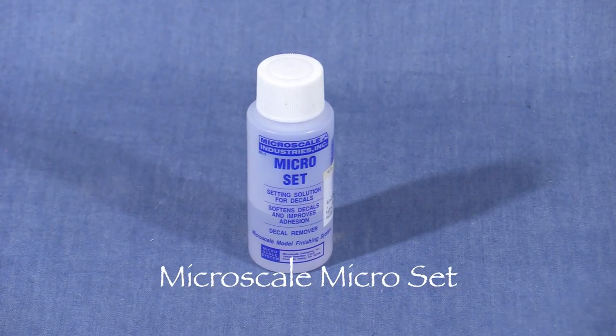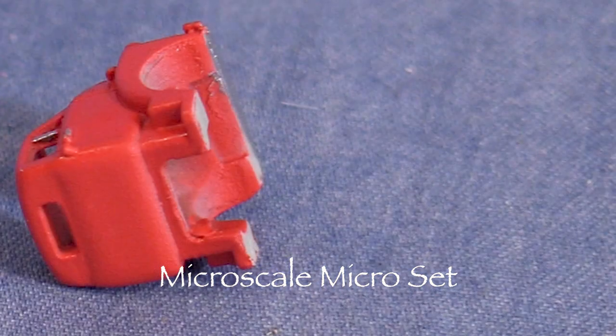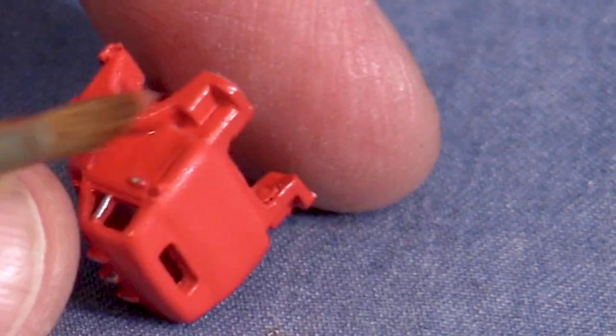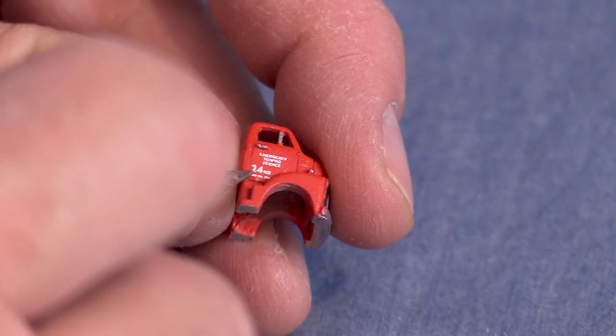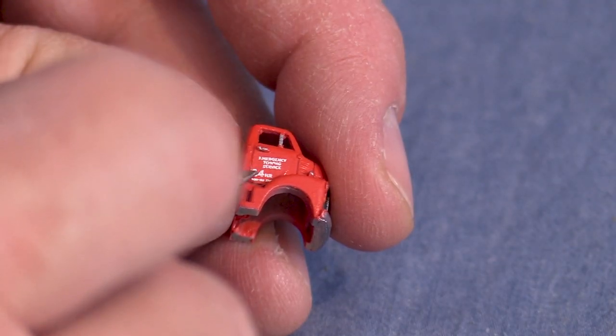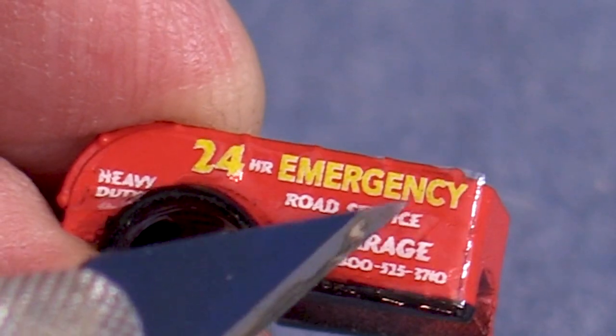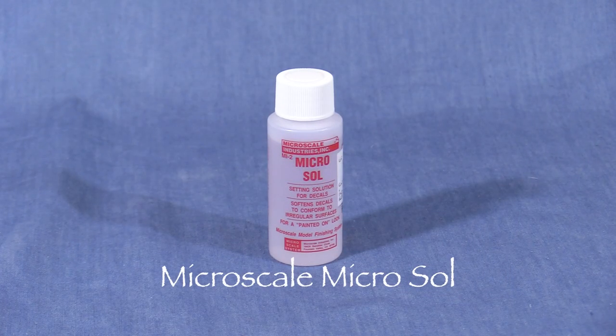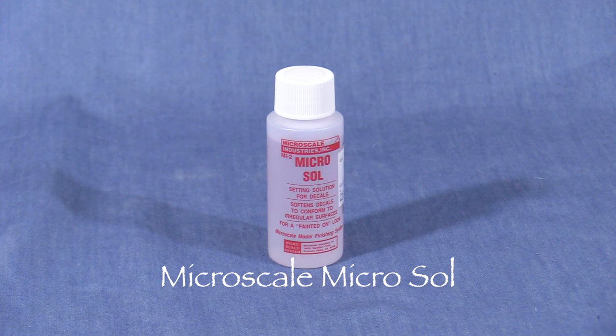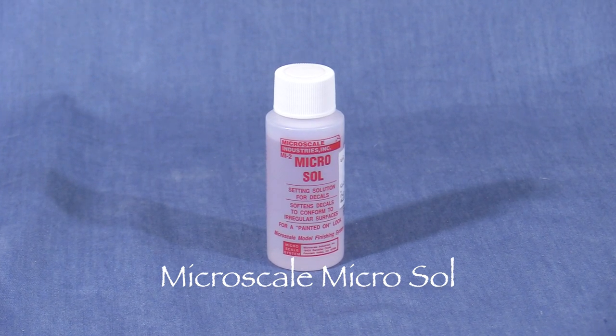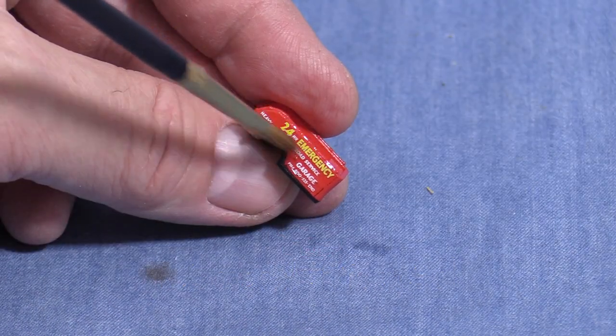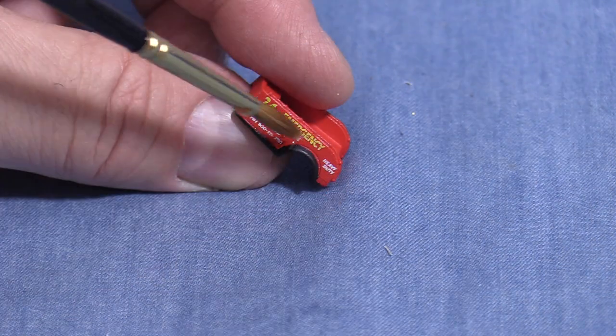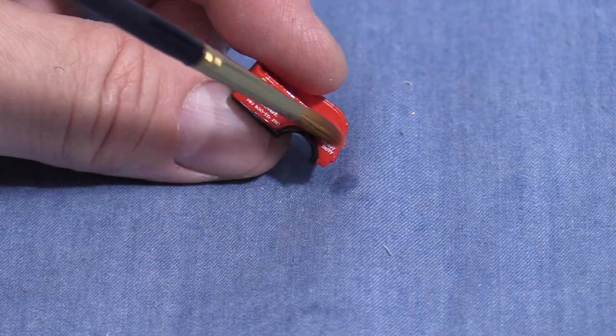While I'm waiting for the decal, I'll brush some Microset onto the door. Microset should always go on first, under the decal. I'll adjust the position of the decal until I'm happy with it. If it gets sticky, I'll apply some more Microset. When the decal is dry on the model, then I'll apply some Microsol on top of the decal to soften it. This will make it conform to the paint and look like it's painted on. Sometimes it takes more than one application of Microsol.